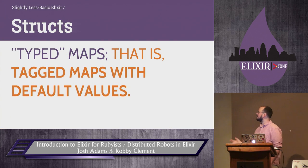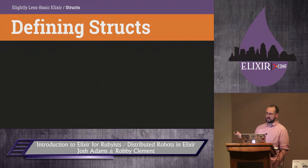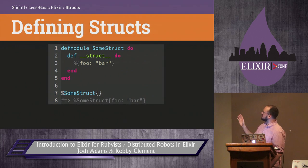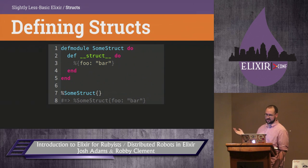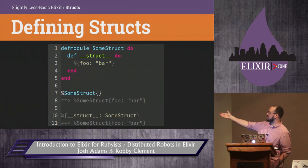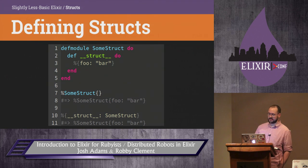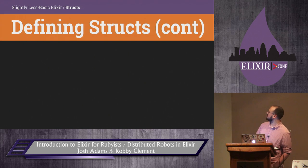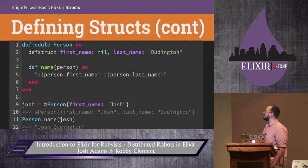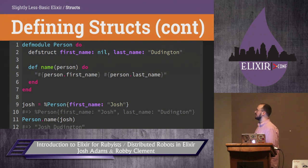Let's have a look at structs. They're typed maps — tagged maps with default values. They're very easy to define. You define a function on your module named __struct__ and give it a map that it returns. Behind the scenes, if you just generate a map with the struct key, it will turn it into a struct and you'll get the default values. Of course nobody wants to define a function called __struct__, so we have defstruct, which just looks nicer. Here we've got a struct that's a person, and this module deals with data in that pattern.